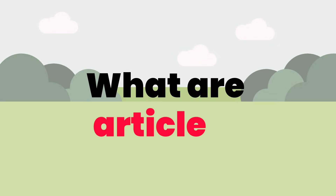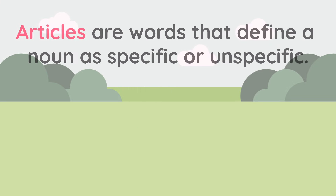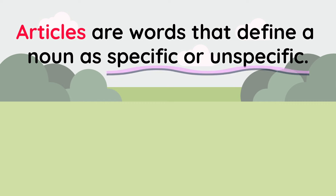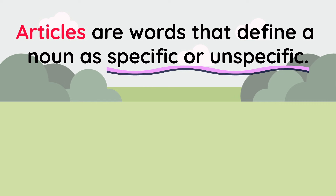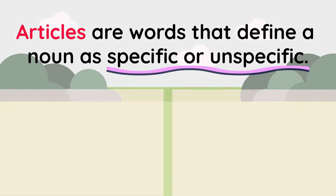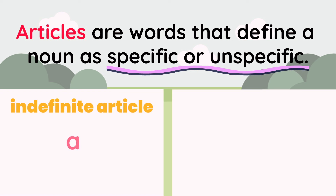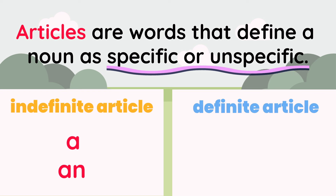First off, what exactly are articles? Articles are words that define a noun as specific or unspecific. In English, we have two types: indefinite articles, a and an, and the definite article, the.